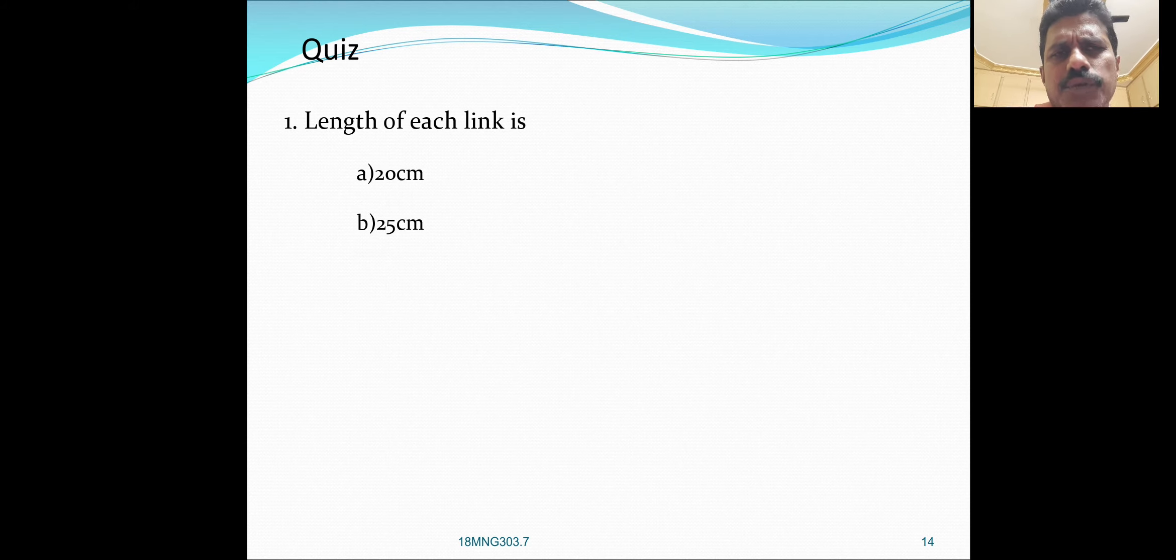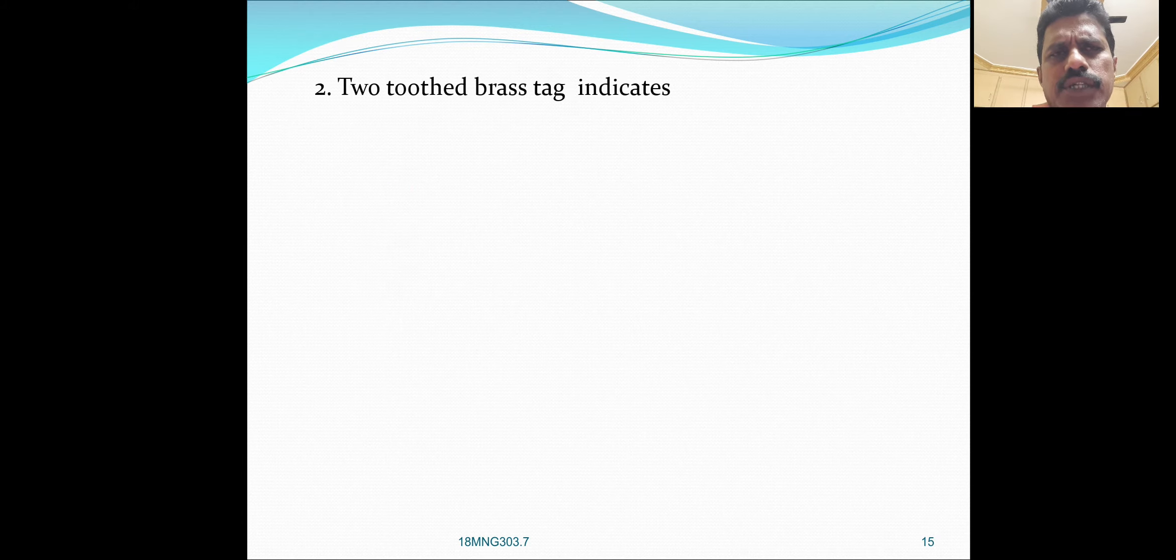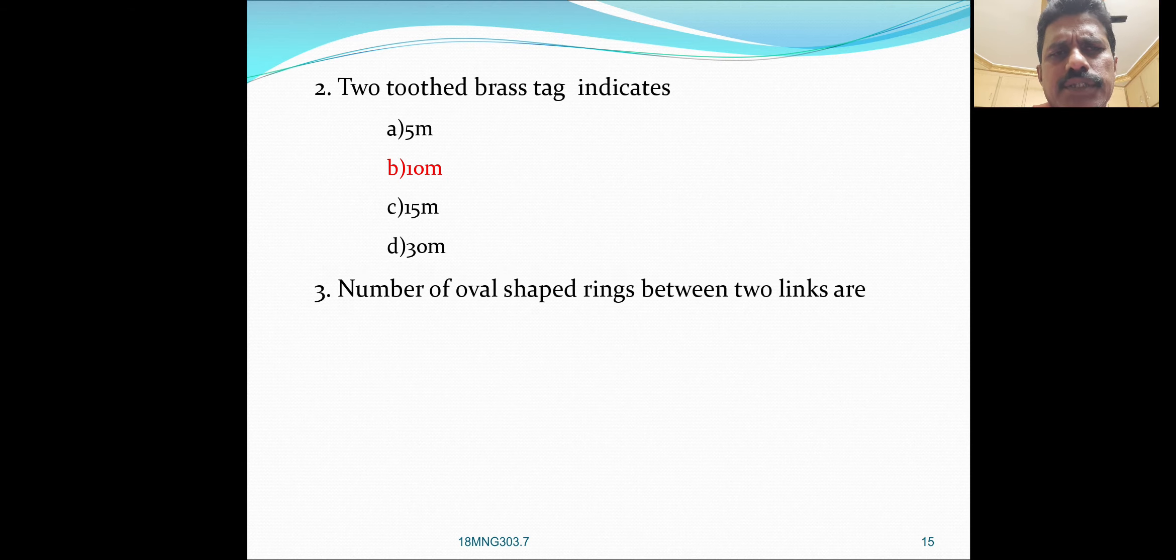Question one: length of each link is 20 centimeters, which is the correct answer. Question two: two toothed brass tag indicates 10 meters. Question three: number of oval shaped rings between two links are three.